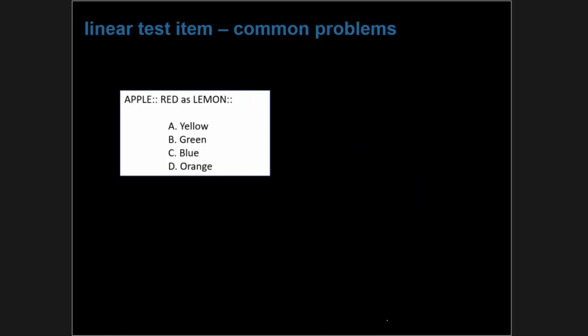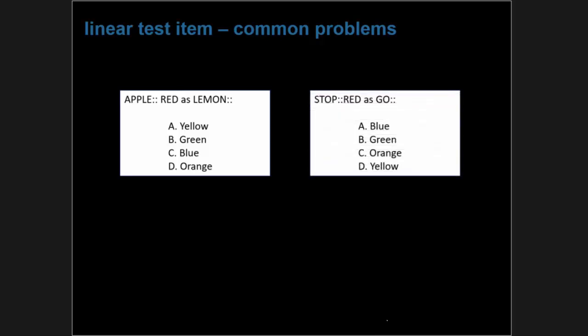Here's another item with a problem — this item has an issue with cultural bias, because in some parts of the world lemons are green and not yellow. It's a simple analogy item used as an example. If we wanted to create an analogy item without cultural bias, we might use something with more widespread universality — for example: 'Stop is to red as go is to green,' using stop signs or traffic lights. These are simple examples of problems and how they can be easily fixed.